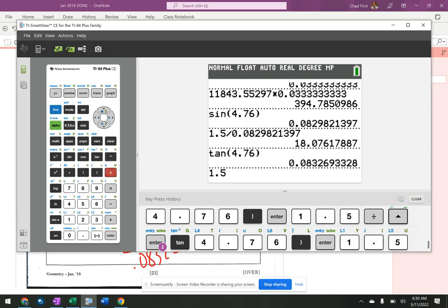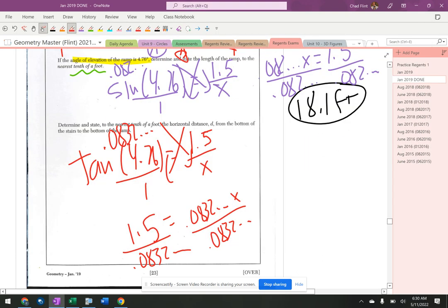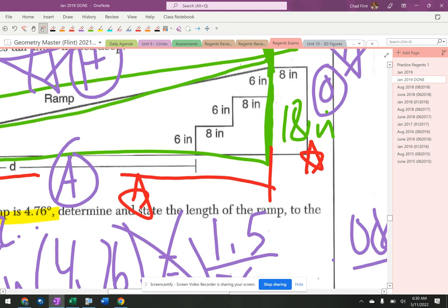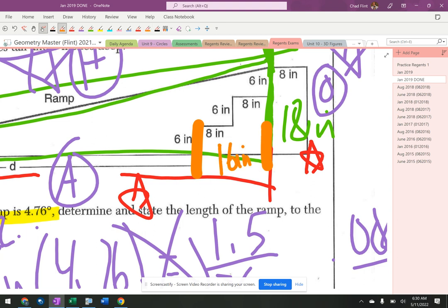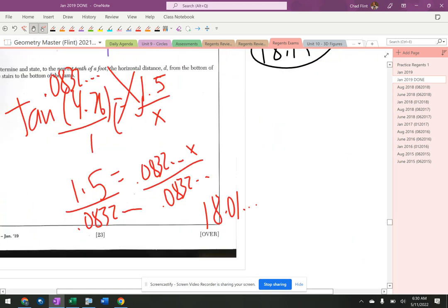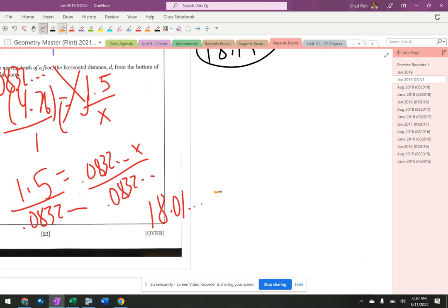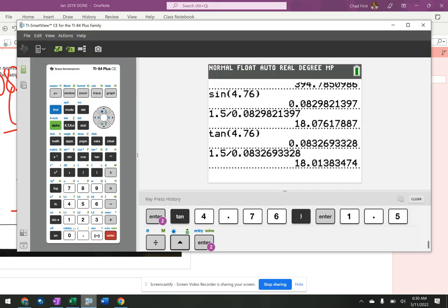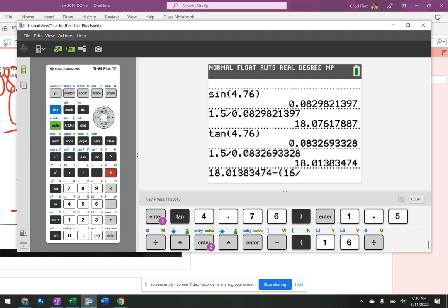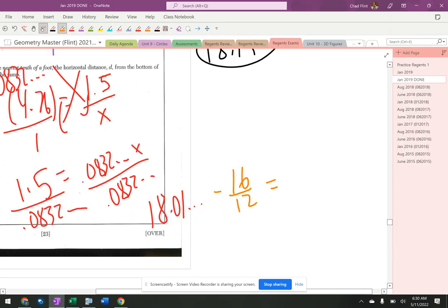Alright, so 1.5 divided by that is 18.01. And then I have to take out from here to there, which is 16 inches. Now that's not feet, so I've got to subtract 16 divided by 12. That's gonna give me the inches converted to feet. So I take that number and I subtract 16 divided by 12, and it gives me 16.68. And it says nearest tenth of a foot, which is 16.7.